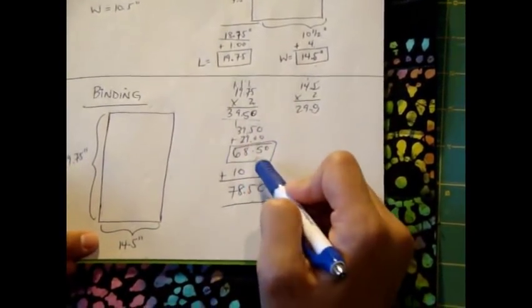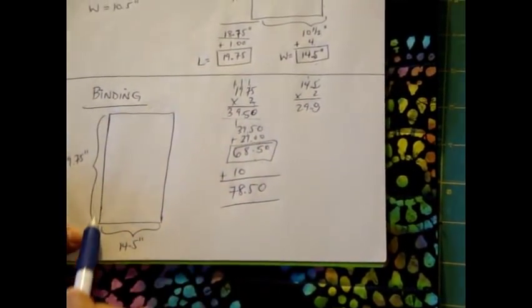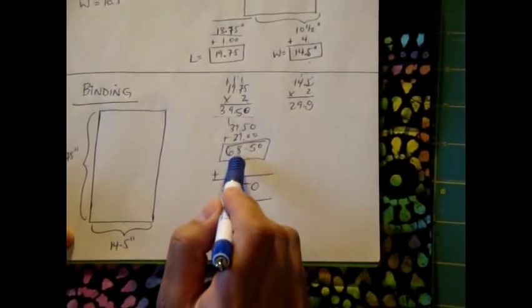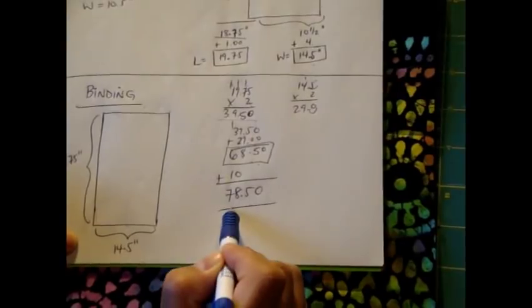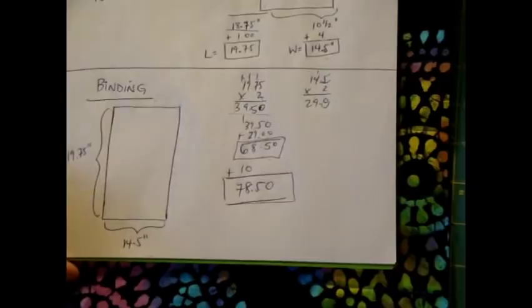When I add both of those sums up, I get 68 and a half inches, which means the entire perimeter of this entire rectangle is 68 and a half inches. To that number, you then want to go ahead and add 10 inches, and the total you finally end up with is 78 and a half inches. That's how long I need to make my binding strip.